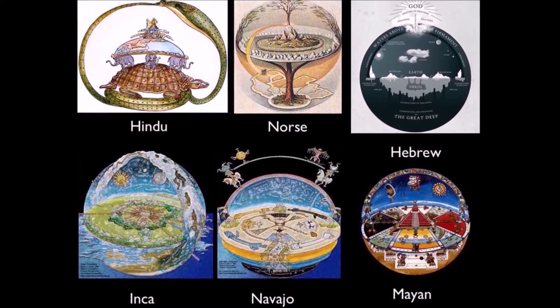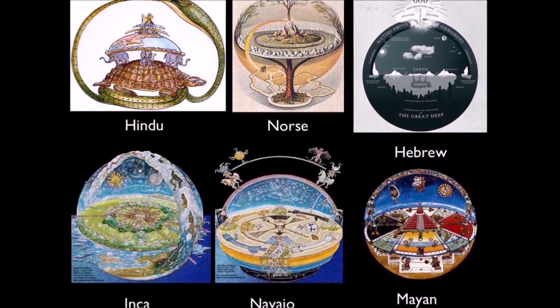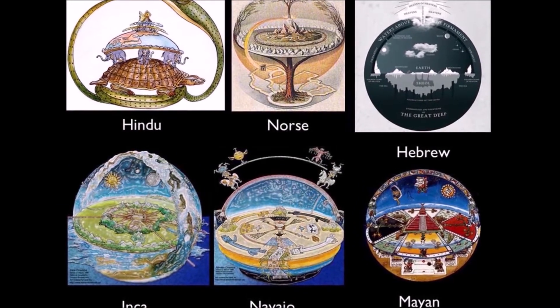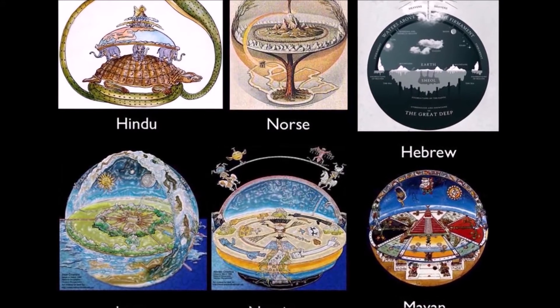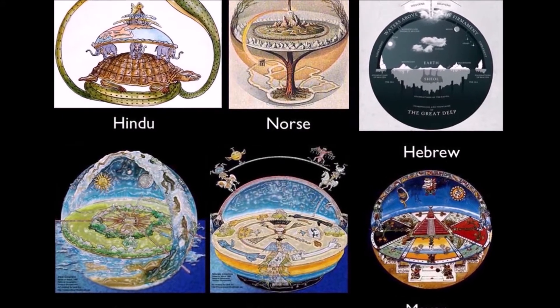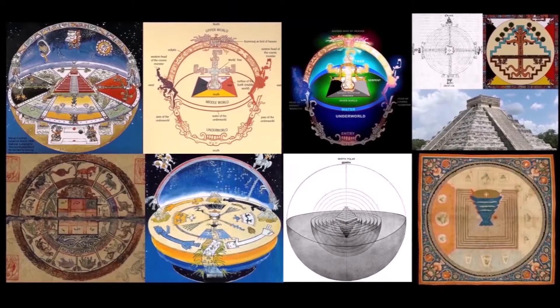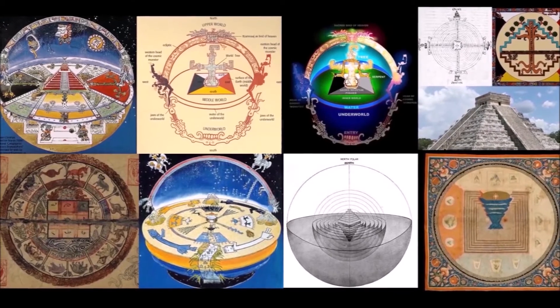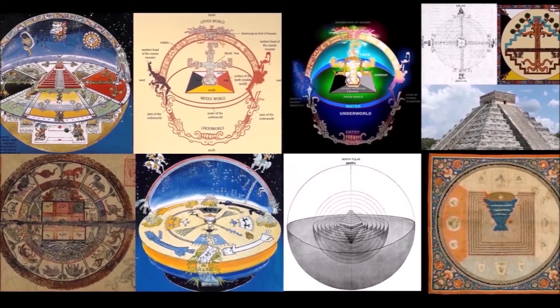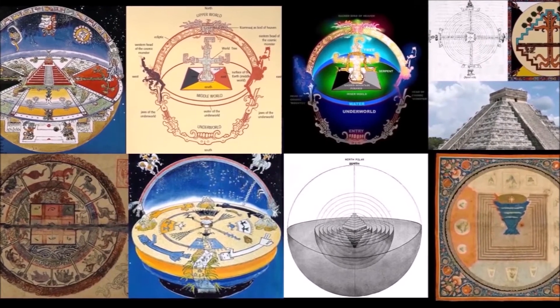All ancient civilizations knew that the Earth is flat. I want to show you how the sky and the Earth were represented by many ancient cosmologies. They all show us a flat arc with four corners, with a dome, along with a bottom in the shape of a circle.